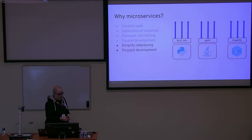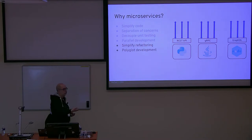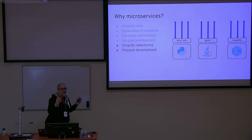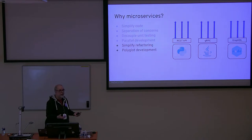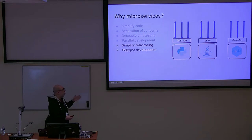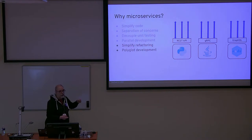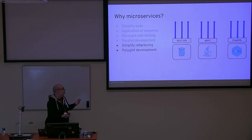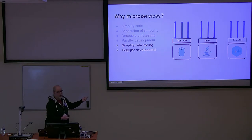Another advantage is polyglot development. One problem of monolithic apps is you're always trying to find a silver bullet — a runtime and framework that does everything. In a microservice architecture, you can pick the best tool for the job. You might write a REST server in Python, something else in Java, or using Node.js. And if you want to refactor and rewrite the Python bit in Go, you can do that fairly easily.